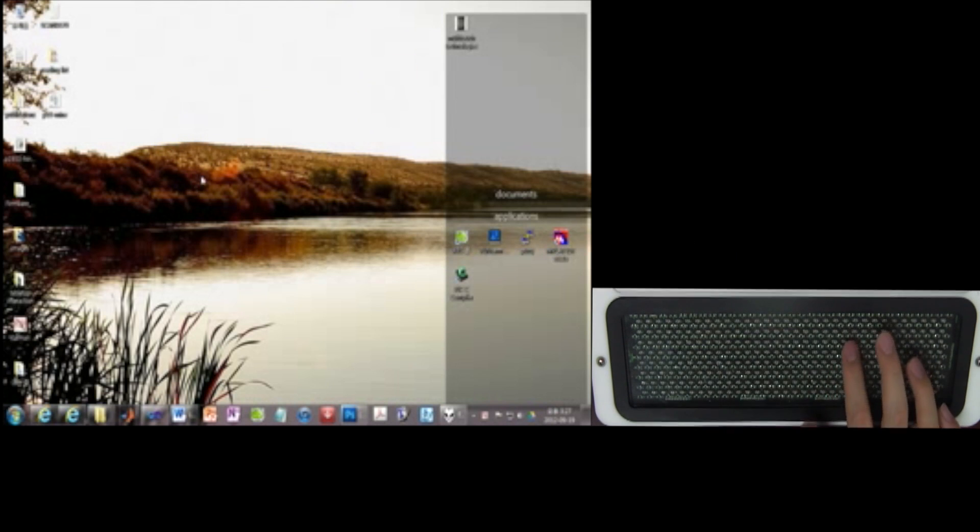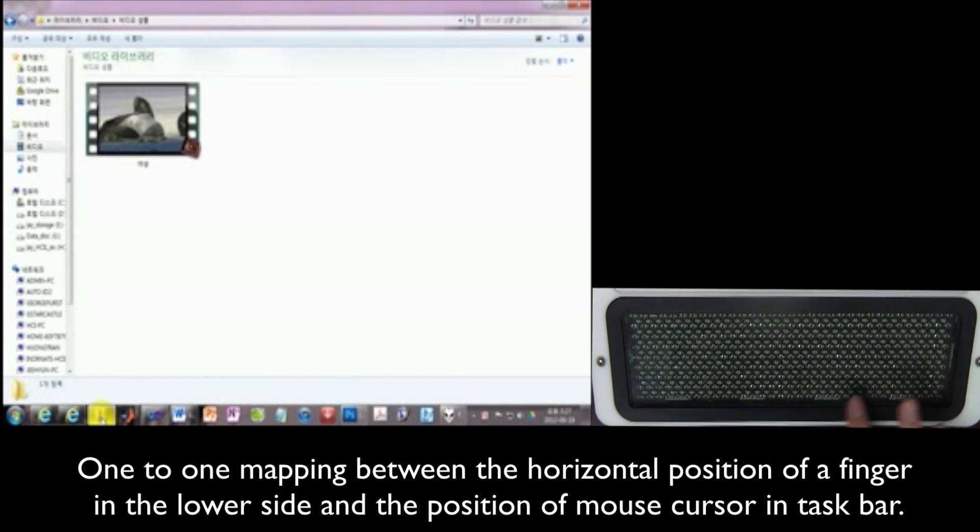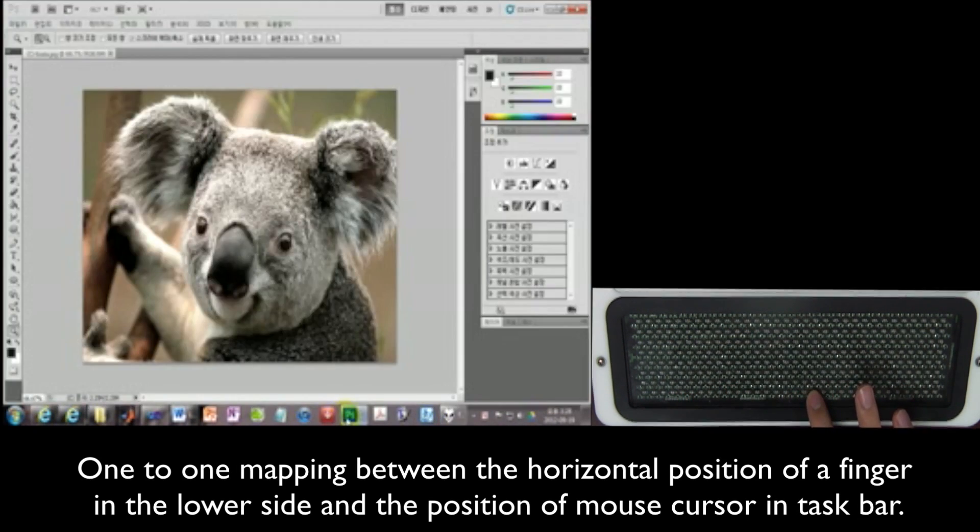In quick application switching, the horizontal position of a finger in the lower side is mapped onto the position of mouse cursor in Windows taskbar.